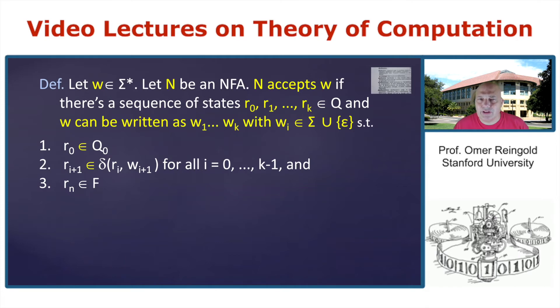So a string W is accepted by NFA N if again, there is a sequence of states R_0 to R_K. And we can write W as W_1 to W_K, where W_i are not only symbols, but symbols or an empty string. With the following property, the property that R_0 is a start state, it's one of the start states. And R_N is one of the accept states.